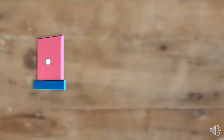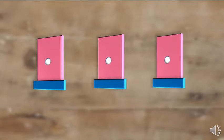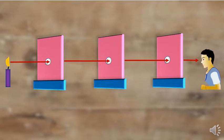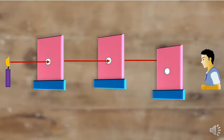Let us perform one experiment. Take a piece of cardboard, make a hole at the center, and put it on a stand. Make more cardboards with stands and put a candle on the left-hand side. When the three cardboards are in one line, light is coming from the candle towards your eye. Now shift the third cardboard stand a little bit — can you see the light? When the three cardboards were in one line, you could see the light, but when one is shifted, it is not visible.